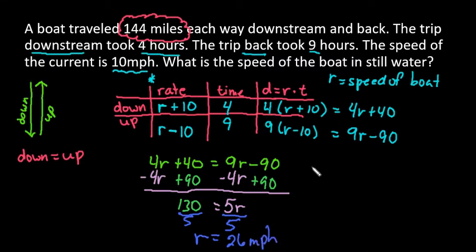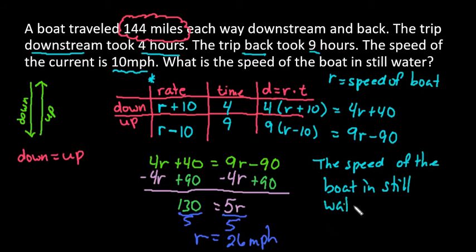So if we wrote this in sentence form, we could say the speed of the boat in still water is 26 miles per hour. So on average, the boat was going 26 miles per hour.